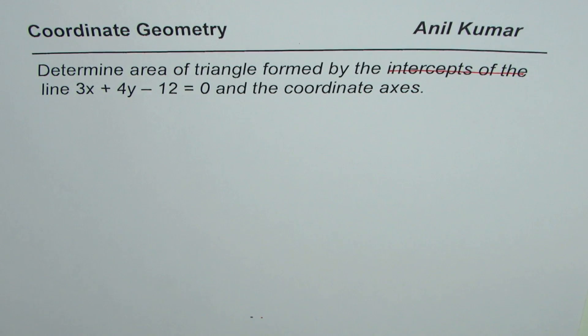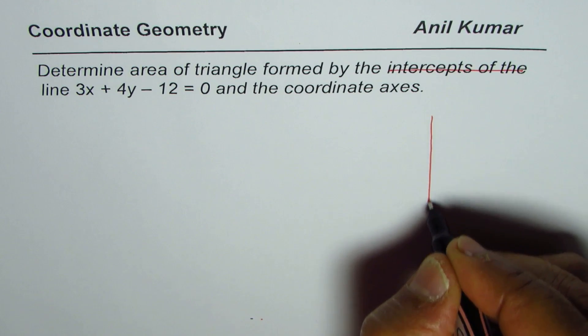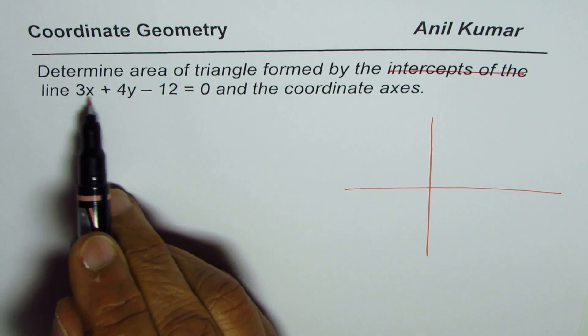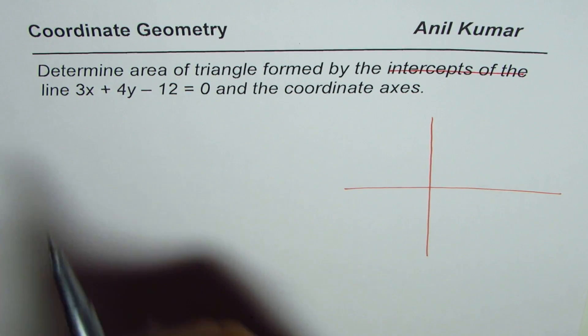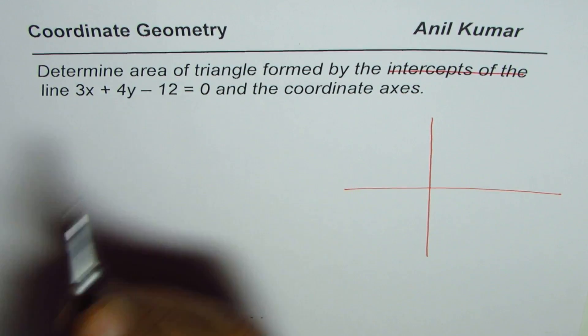So let us sketch and see what the situation is and then we'll solve this question. Coordinate axes means this and the line here is 3x plus 4y minus 12. To sketch this line we can find intercepts and then sketch it.